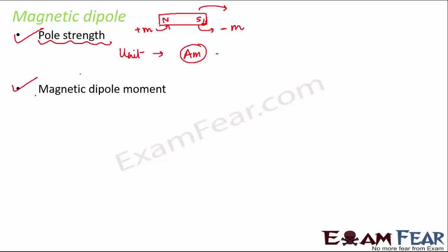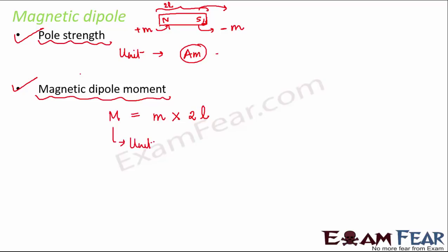The next thing is magnetic dipole moment. It is the product of pole strength multiplied by the length of the magnet. Small m is pole strength and 2l is the length of the magnet. Magnetic dipole moment, denoted by capital M, is m into 2l. Its unit is ampere meter squared, since pole strength is in ampere meter multiplied by another length.